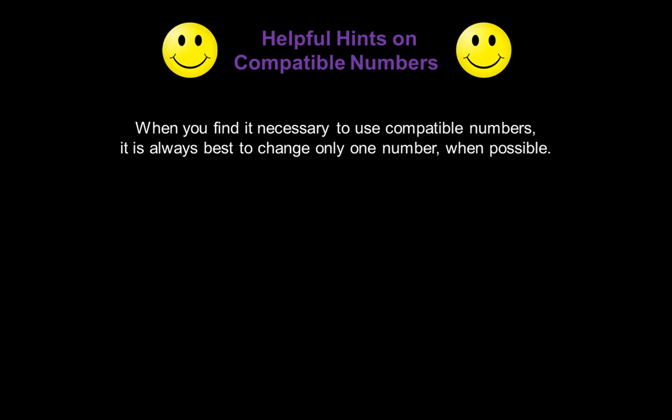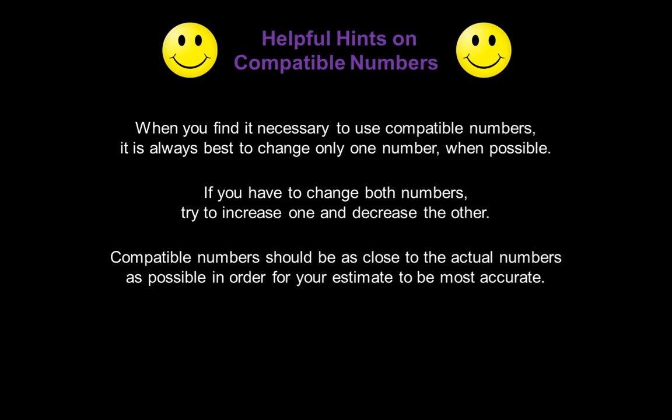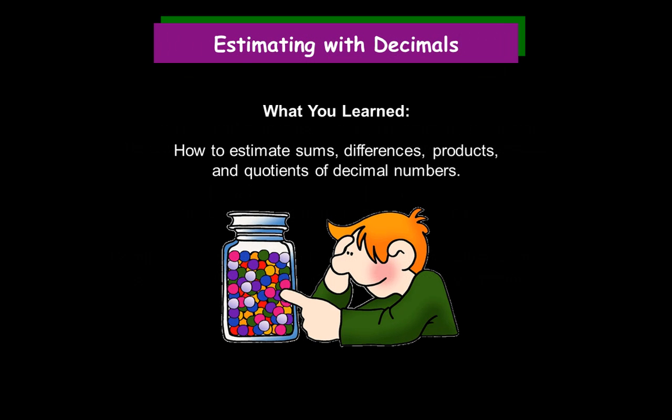I want to end with a couple helpful hints on using compatible numbers. When you find it necessary to use compatible numbers for your multiplication and division problems, remember, it's always best to change only one number when possible. If you have to change both numbers, try to increase one and decrease the other. Compatible numbers should be as close to the actual numbers as possible in order for your estimate to be most accurate. Keep those tips in mind. And congratulations! You've learned how to estimate sums, differences, products, and quotients of decimal numbers.